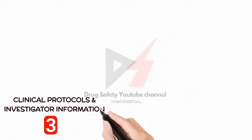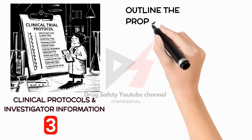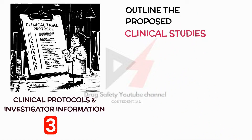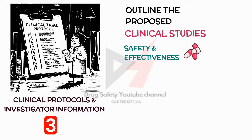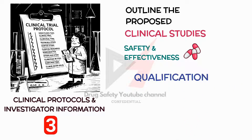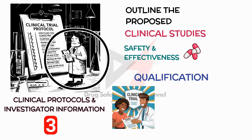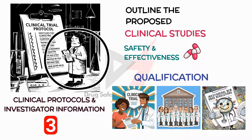Finally, clinical protocols and investigator information. Here, we outline the proposed clinical studies that will evaluate the safety and effectiveness of the new medicine in humans. This section also includes information about the qualifications of the clinical investigators who will oversee the trials, plus commitments to things like obtaining informed consent from the research subjects, getting the study reviewed by an Institutional Review Board, and following all the investigational new drug regulations.